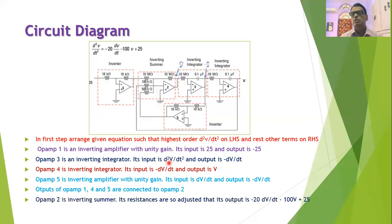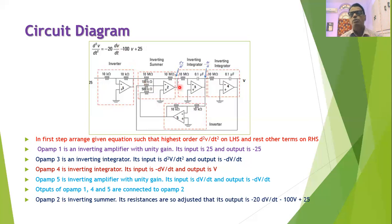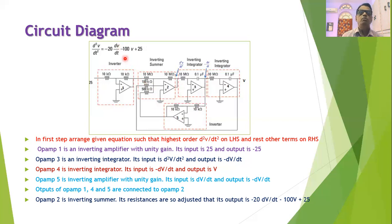The input and feedback resistances are adjusted as per the equation so that the output of operational amplifier 2 equals d²V/dt², which is −20 dV/dt − 100V + 25.